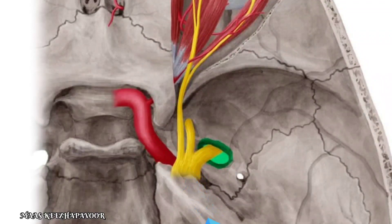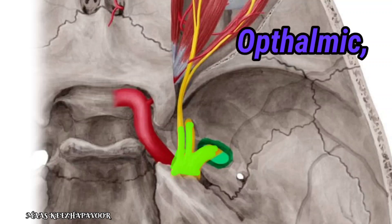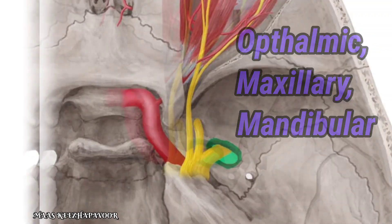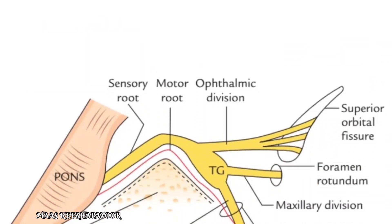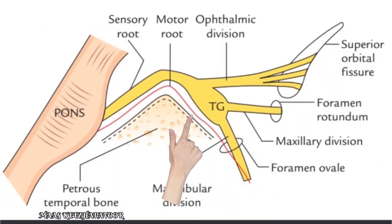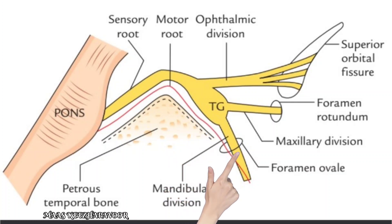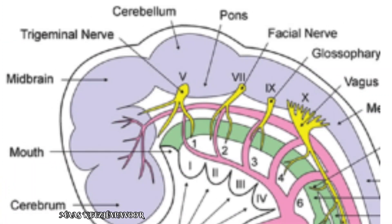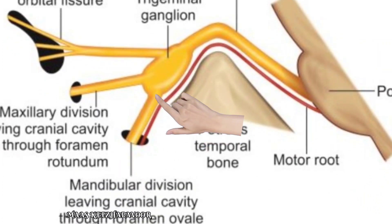The sensory root forms the sensory ganglion, which is located in the trigeminal impression. The three divisions — ophthalmic, maxillary, and mandibular — branch from this ganglion. The motor root runs deep to the trigeminal ganglion and joins with the mandibular division. Hence, the ophthalmic and maxillary divisions are purely sensory, but the mandibular division is a mixed nerve.